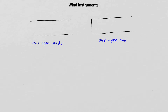We have wind instruments with two open ends, so air can pass from one end to the other. And then we have instruments with one open end, where air enters the open end, reflects from the closed end, and comes out again from the open end.